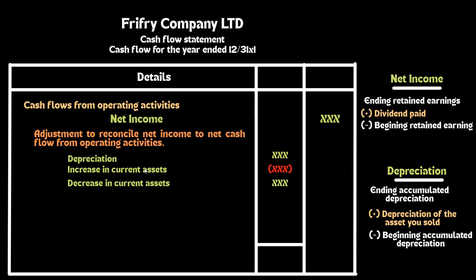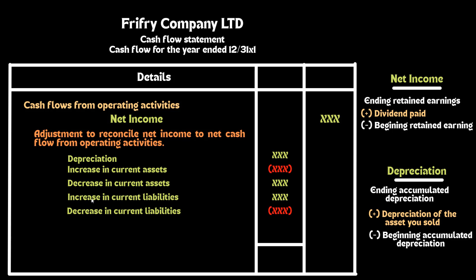If the current asset increases, you need to deduct that figure. And if the current asset decreases, then you need to add the number as an adjustment. The third item is the increase or decrease in current liabilities. If current liabilities increase, you must add the number, and if current liabilities decrease, you need to deduct the number.